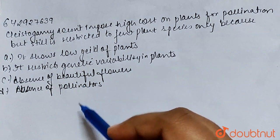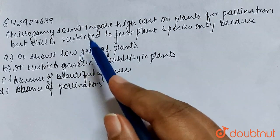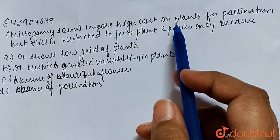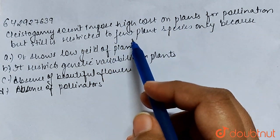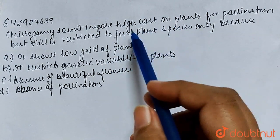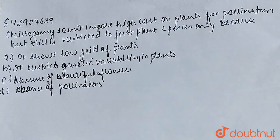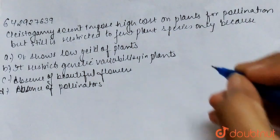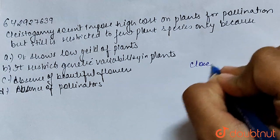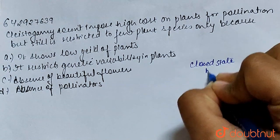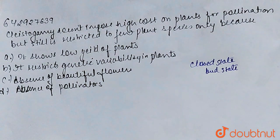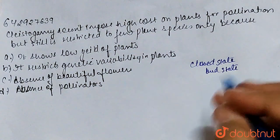So guys, you are asking that cleistogamy is not imposed on the plant, but it is restricted to a few plant species. For those few plant species, it means that cleistogamy is in a closed state or in a bud state — the flowers are not open, it is in a mature state.